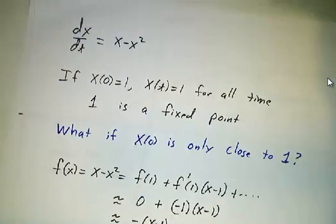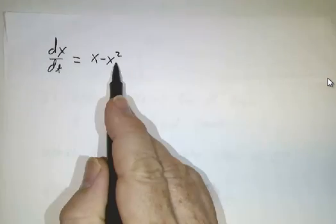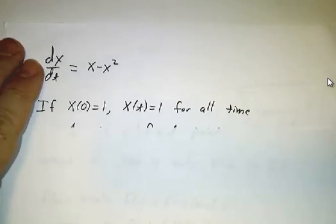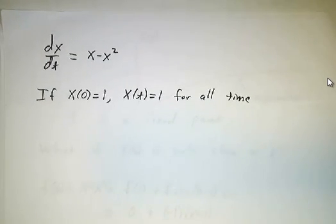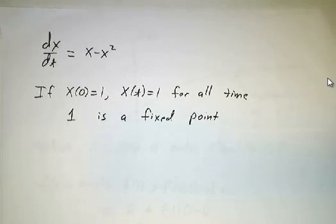But x = 0 isn't the only fixed point. If you start off with x being 1, then 1 - 1² is 0. And if x starts off as 1, then x = 1 is a solution that goes for all time. So 1 is also a fixed point. 0 is a fixed point and 1 is a fixed point.